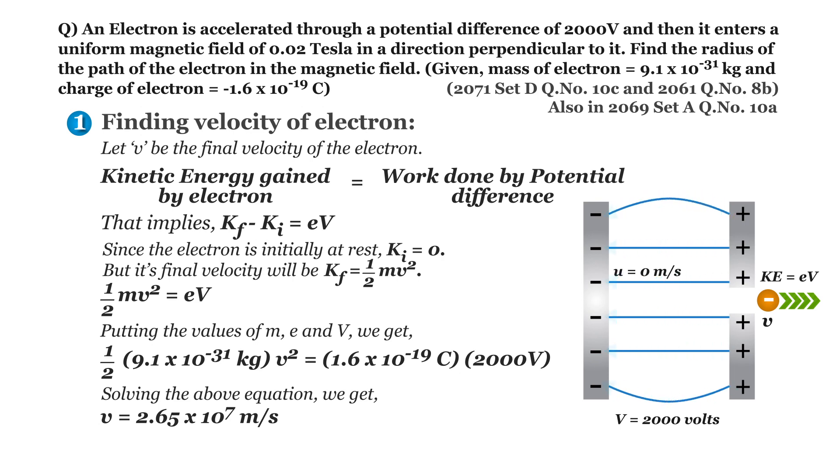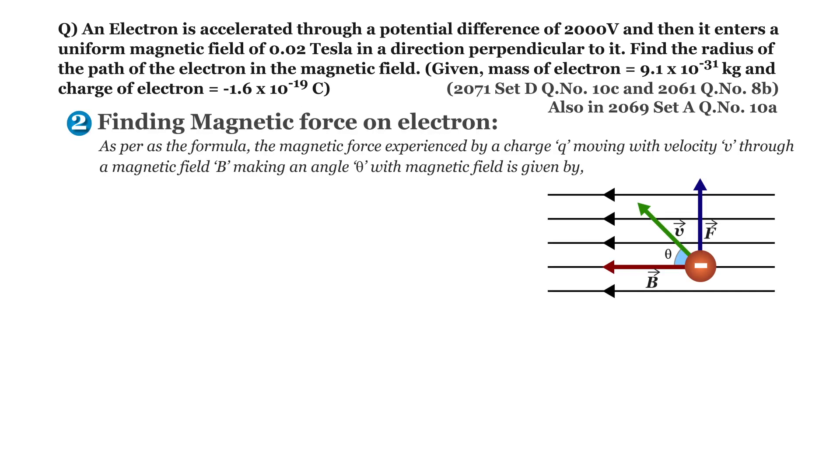Now let's solve for magnetic force in number 2. As per the formula, the magnetic force experienced by a charge Q moving with velocity v through a magnetic field B making an angle theta with magnetic field is given by F equals Q times v cross B, or Q VB sin theta N cap, where N cap is a unit vector perpendicular to both v vector and B vector.